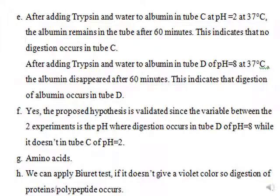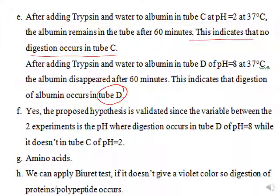To write the full interpret: after adding trypsin and water to albumin in tube C, the albumin remains in the tube after 60 minutes — this indicates that there is no digestion in tube C. While after adding trypsin and water to albumin in tube D at pH 8 at 37 degrees Celsius, the albumin disappeared after 60 minutes — this indicates that digestion of albumin occurs in tube D. The hypothesis is confirmed, since the variable between the two experiments is the pH, where digestion occurs in tube D at pH 8 and there is no digestion in tube C at pH 2.